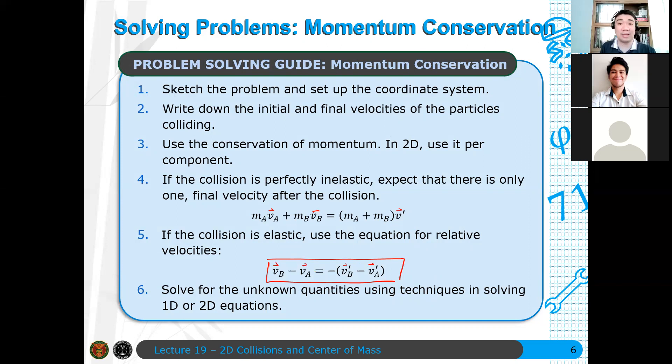But if you haven't seen it, this is acceptable. This can substitute for the kinetic energy relation. This can also be extended into vectors because we are dealing with relative velocities here. Finally, you need to solve for unknown quantities using techniques of solving 1D or 2D collisions. It's always systems of equations. It depends on how many components and how many unknowns you have for solving the systems of equations.